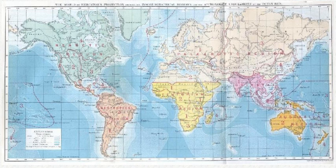Phytogeography is the branch of biogeography that studies the distribution of plants. Zoogeography is the branch that studies distribution of animals. Knowledge of spatial variation in the numbers and types of organisms is as vital to us today as it was to our early human ancestors, as we adapt to heterogeneous but geographically predictable environments.